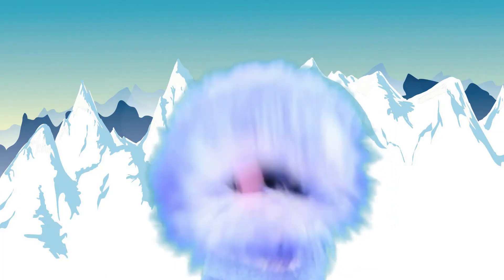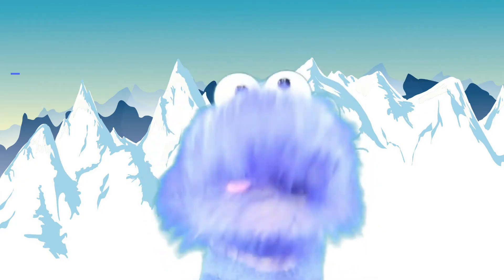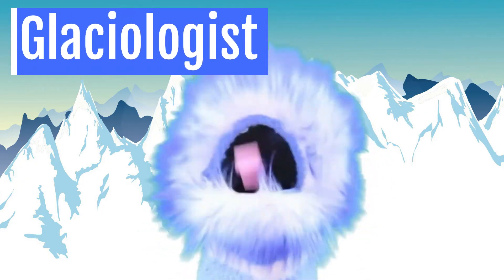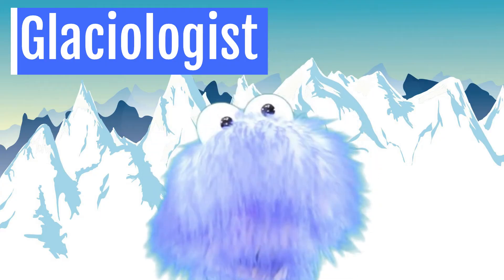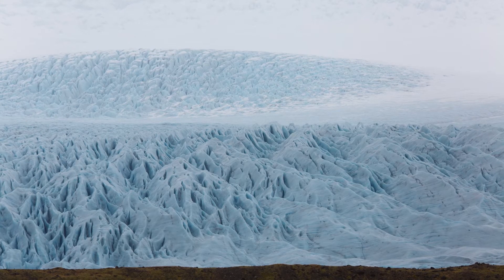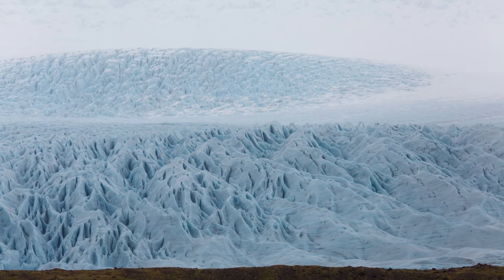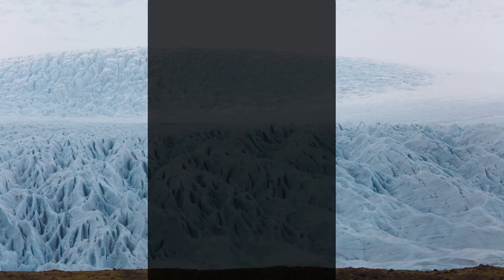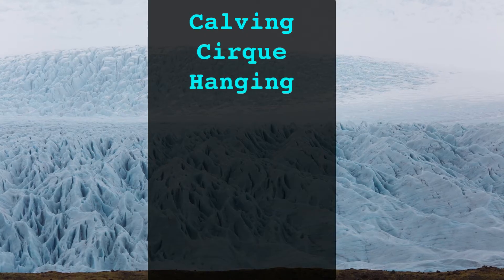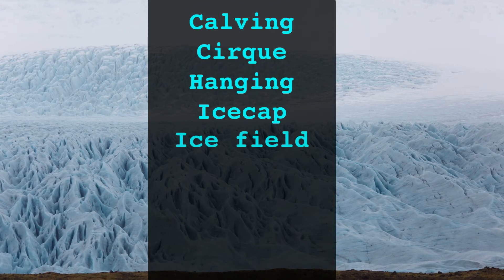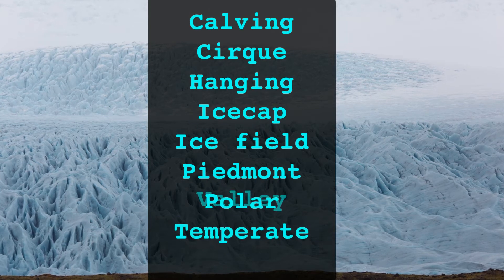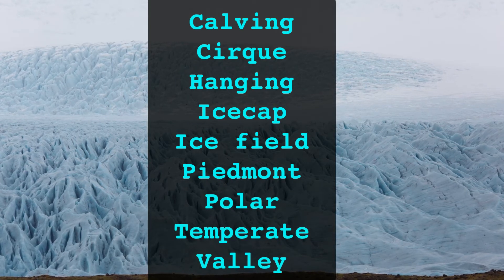A scientist who studies glaciers is called a glaciologist, and they have given names to all the different types of glaciers. Here are a few of the main types that glaciologists have named: calving, a cirque, hanging, ice cap, ice field, Piedmont, polar, temperate, and valley glaciers.